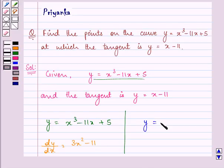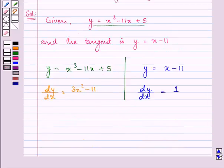Here we have the equation of the tangent as y equals x minus 11. On differentiating y with respect to x, we have the answer as 1. So that means the slope of the tangent is 1.